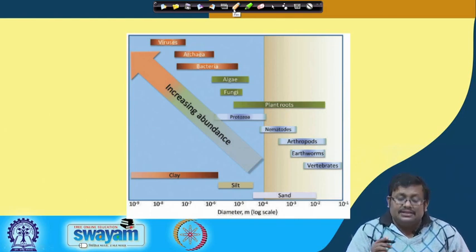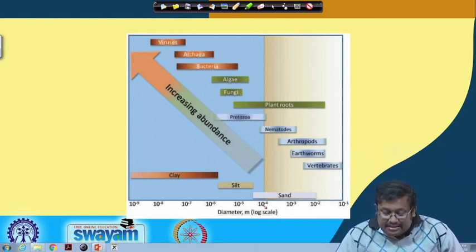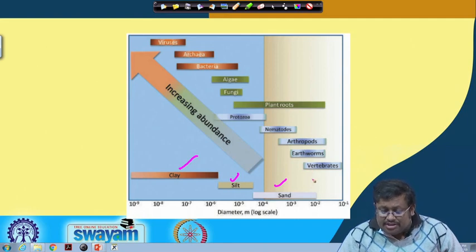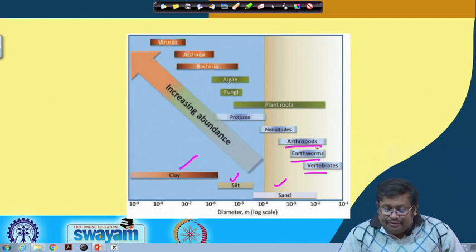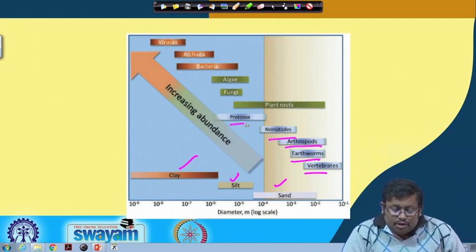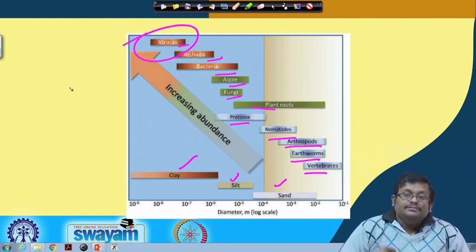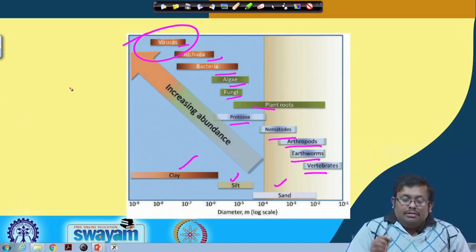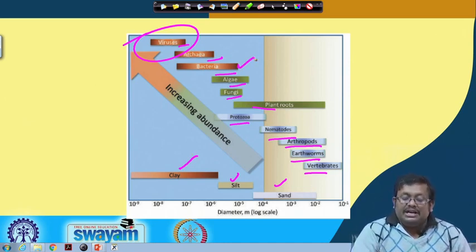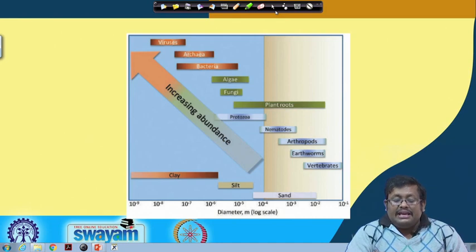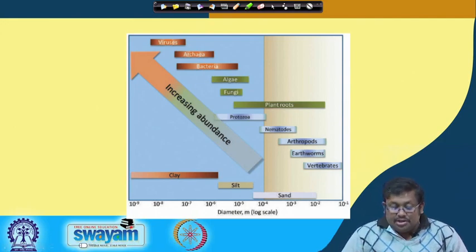The relative size differences of soil organisms can be compared to soil particles. Viruses are the most minute fraction, bacteria are the smallest organisms in soil microflora, then archaea, then bacteria and algae, with actinomycetes in between bacteria and fungi. Protozoa are larger, followed by plant roots, fungi, and algae at progressively larger sizes up to vertebrates.